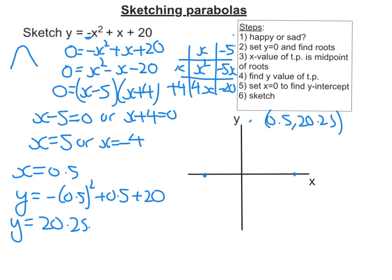Right, lastly, I need to find my y intercept. So you put x equals 0 into my equation. So y is equal to negative 0 squared plus 0 plus 20. So it's going to be 20. Now I need to plot my curve here.